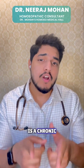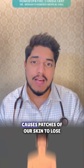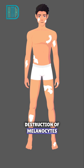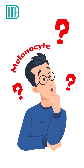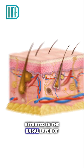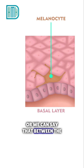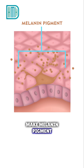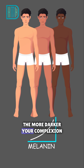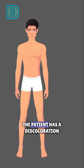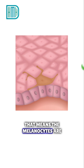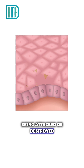Vitiligo is a chronic autoimmune condition that causes patches of skin to lose pigment or color due to destruction of melanocytes. Melanocytes are situated in the basal layer of the epidermis — between the epidermis and the dermis — and produce melanin pigment. The more melanin you have, the darker your complexion. In vitiligo patients, the white discoloration indicates that melanocytes are being attacked or destroyed.